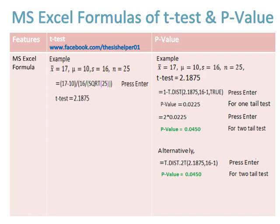Alternatively, you can also use =T.DIST.2T, select t-test value which is 2.1875, write comma, and then subtract 1 from sample size which is 16. Press enter to get 2-tails test p-value of t-test which